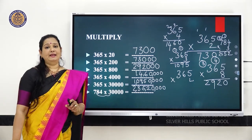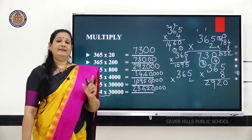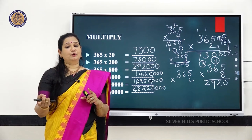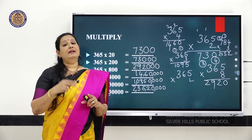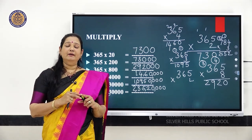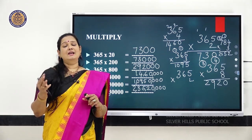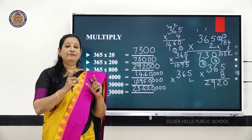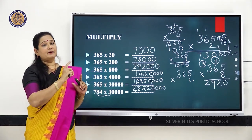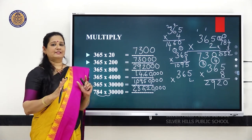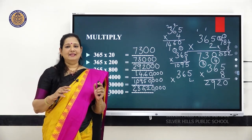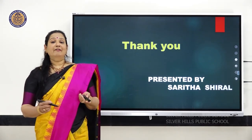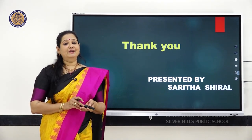So when you multiply any number by 10, add 1 extra zero; by 100, add 2 extra zeros; by 1000, add 3 extra zeros; and by 10,000, add 4 extra zeros. For multiples, first multiply that number with the whole number and then put the extra zeros. Next class, we will come with 3-digit by 3-digit multiplication and word problems.